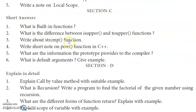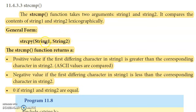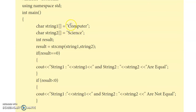Third question: write about the strcmp function — that is, the string compare function. From page 187. The strcmp function takes two arguments, string1 and string2, and compares them lexicographically. It returns a positive value, negative value, or zero based on the comparison.